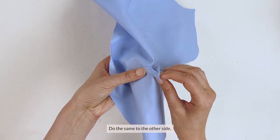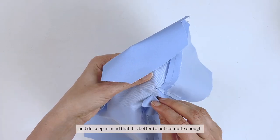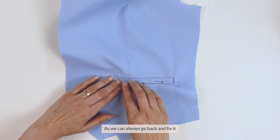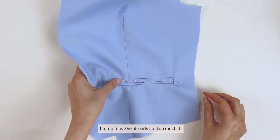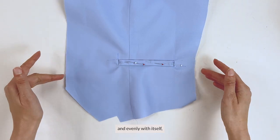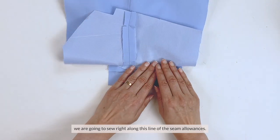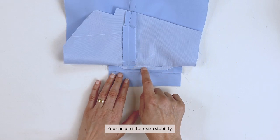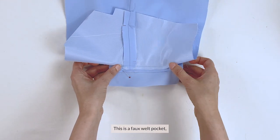Smooth everything out and we're going to pin this here. Do the same to the other side and do keep in mind that it's better not to cut quite enough than to cut too much as we can always go back and fix it but not if you've already cut too much. Once everything is laying nicely and evenly with itself, we're going to sew right along this line of the seam allowances. You can pin it for extra stability. This is a faux welt pocket.